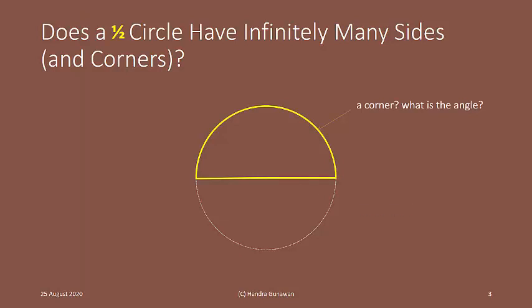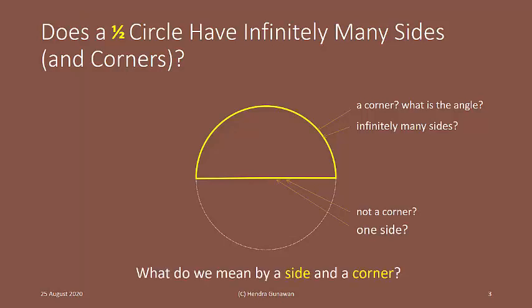What is the angle? Is this point not a corner? Does this part have infinitely many sides? Is this part only one side? What do we mean by a side and a corner?